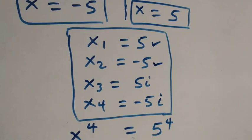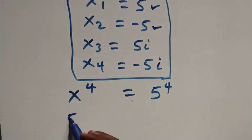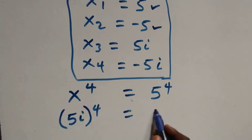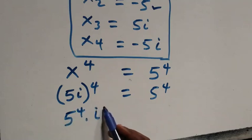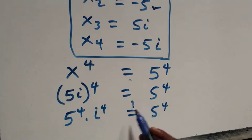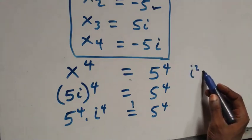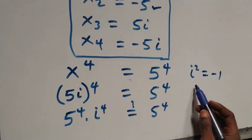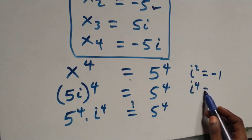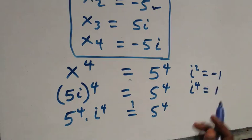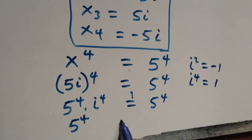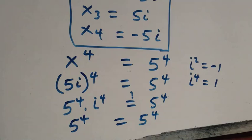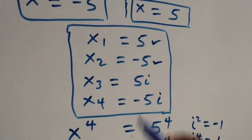Also for 5i, this becomes 5i raised to the power of 4 is equal to 5 raised to the power of 4. The power of 4 affects both 5 and i, so we have 5 raised to the power of 4 times i raised to the power of 4 equals to 5 raised to the power of 4. Since i squared equals to minus 1, squaring again gives i raised to the power of 4 equals minus 1 squared equals plus 1. So 5 raised to the power of 4 times 1 is the same as 5 raised to the power of 4, which equals 5 raised to the power of 4. The left hand side equals the right hand side, so 5i satisfies the given problem.